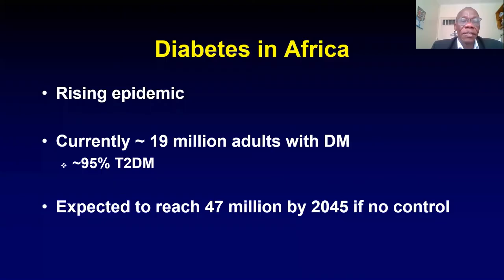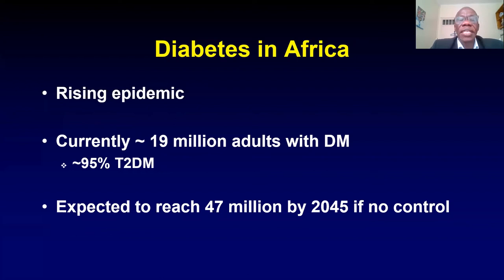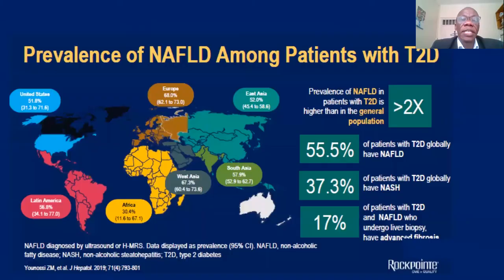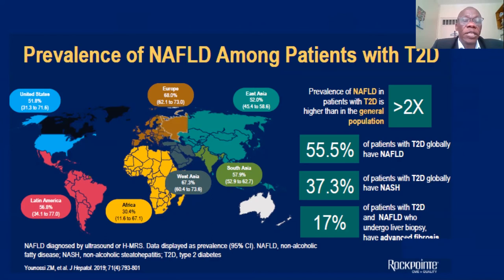There is a rising epidemic of diabetes in Sub-Saharan Africa. Currently, about 19 million adults have diabetes mellitus, most of whom have type 2 diabetes mellitus. This is expected to reach up to 47 million by 2045, especially if no control measures are put in place. Among patients with type 2 diabetes in Africa, currently about 30.4% are reported to have NAFLD.